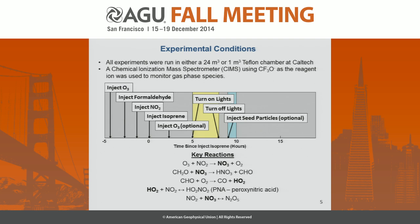We ran several chamber experiments in both the 24-cubic-meter Teflon bag chamber at Caltech and a 1-cubic-meter Teflon chamber, using chemical ionization mass spectrometry with CF3O- as a reagent ion to look at gas-phase species. The key was having both NO3 and HO2 present, focusing on the RO2 plus HO2 pathway rather than the RO2 plus RO2 pathway. We injected 2 to 4 ppm of formaldehyde into the chamber, since formaldehyde reacts with NO3 to form HO2, creating a coupled system where whenever NO3 is present, HO2 is also around. Once the main nitrates were generated, we turned on lights to produce OH to see decomposition products and form the epoxide, then turned off lights and injected various seed particles to understand the uptake potential of the epoxide.